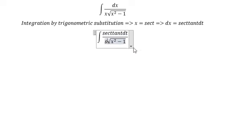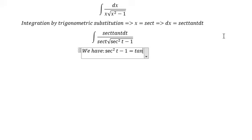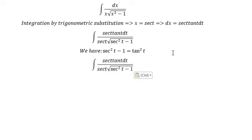We change x to sec(t), x squared to sec squared t. Now we have the formula sec squared t minus 1 equals tan squared t, so we put tan squared t in here.